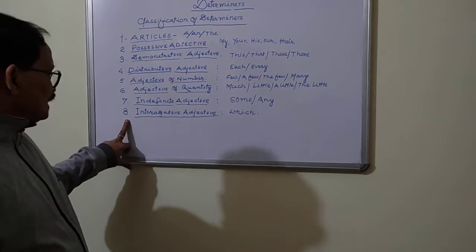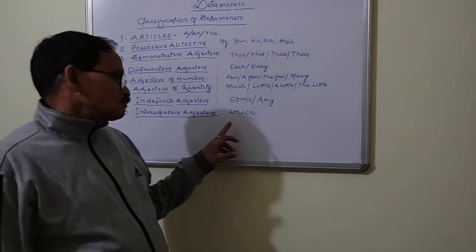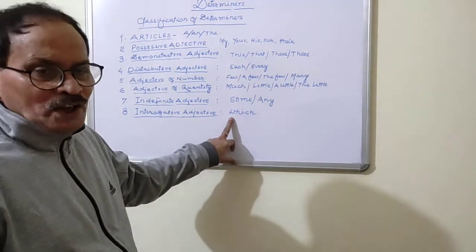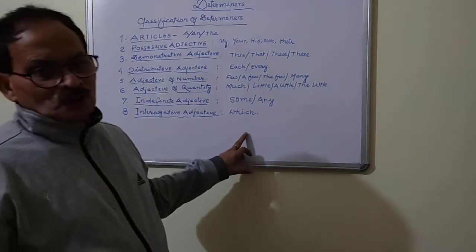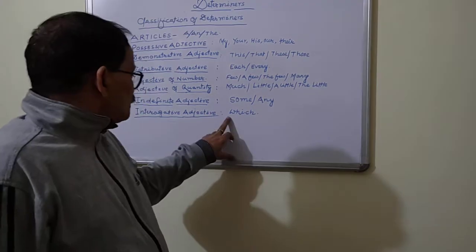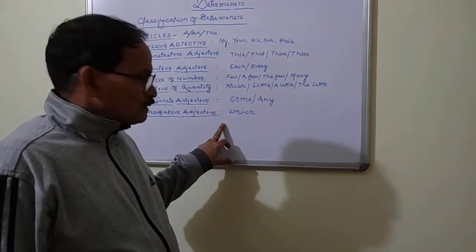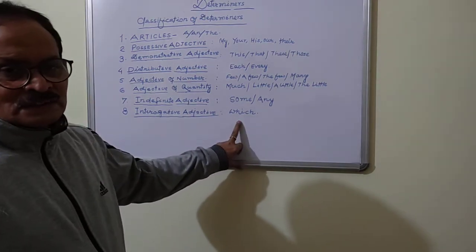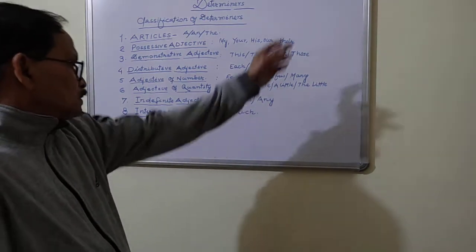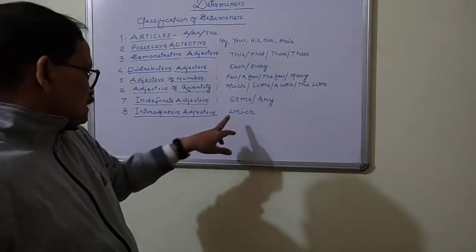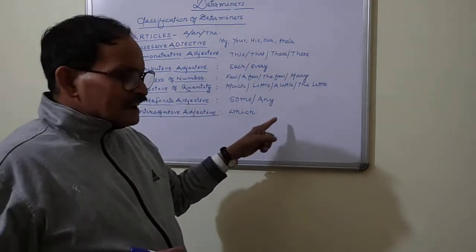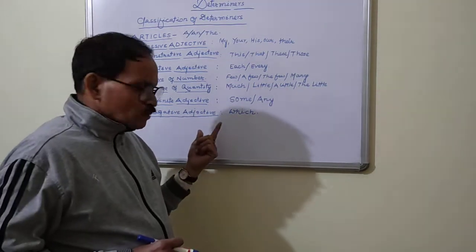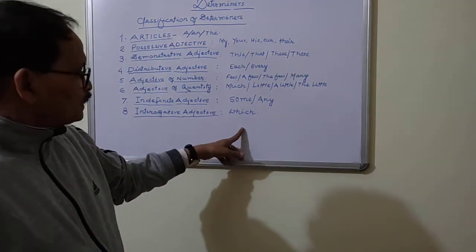The last one is interrogative adjective. Example: 'which.' If I say, 'which book do you like most?' — here 'book' is the noun and 'which' is the interrogative adjective. It indicates as a Determiner because when 'which' is used before 'book,' it classifies the book, it symbolizes the book, it specifies the book and acts as a Determiner.